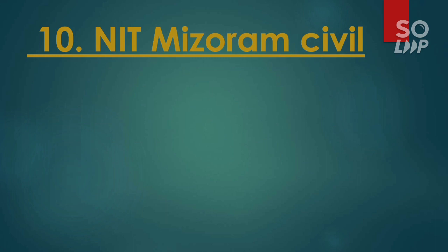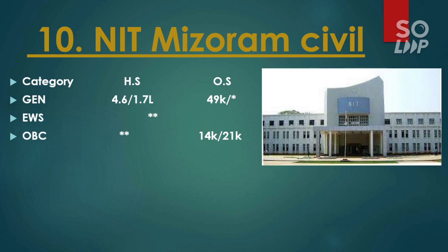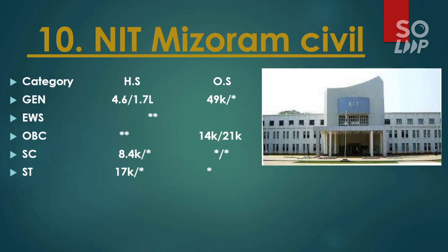The tenth and last NIT is NIT Mizoram, which also has Civil Engineering as the lowest cutoff branch. For General, it is 49,000. For EWS, there is no seat. For OBC, it is 14,000 and 21,000. For SC, there is no seat. For ST other state, there is no reservation. These are the 10 NITs with the lowest possible cutoff for a particular branch. Thanks for watching — please share this video and subscribe for future updates.